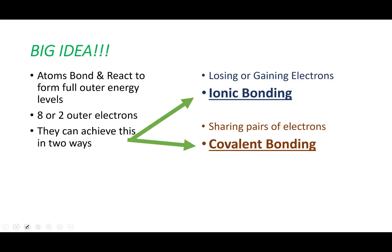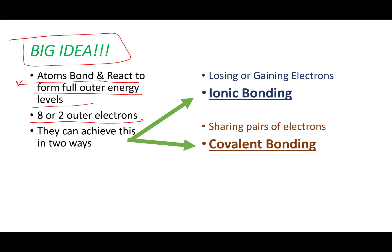This octet rule is a big idea. Why do chemical reactions happen? Reactions happen because atoms are bonding to form full outer energy levels — that's going to be eight or two outer electrons. There are two ways this can happen: either by gaining or losing electrons, which is called ionic bonding, or by sharing pairs of electrons, which is called covalent bonding. We're going to spend most of the rest of this week talking about ionic bonding, and next week we'll get into covalent bonding. Make sure you put a big star by this slide — big idea. See you next time!